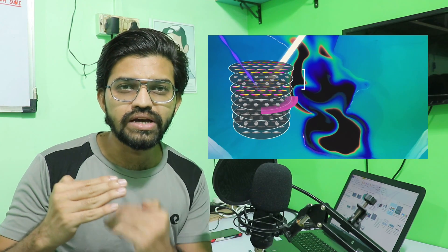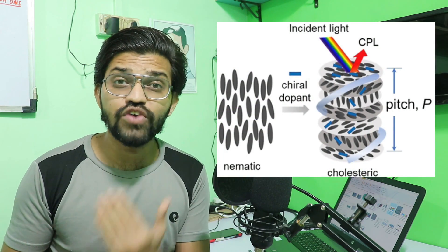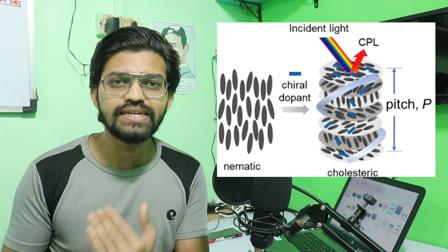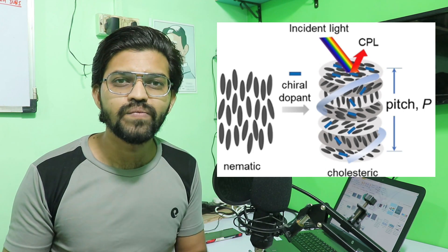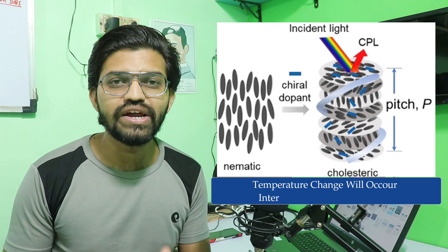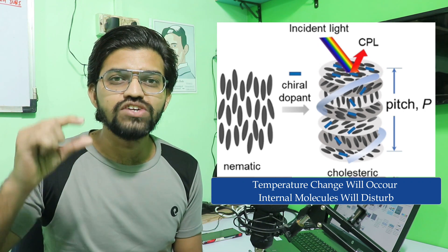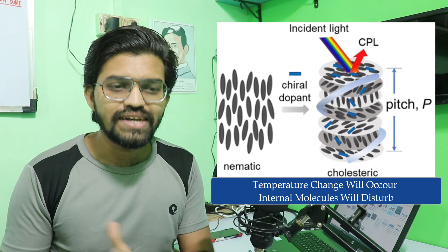When the distance between layers changes, a different wavelength is formed and we see a different shade of light coming out from the thermochromatic paint. So as the distance between two consecutive layers changes, it forms a different wavelength, and a different shade of reflected light is observed. When a temperature change occurs, the internal molecules are disturbed and the spacing between layers changes.